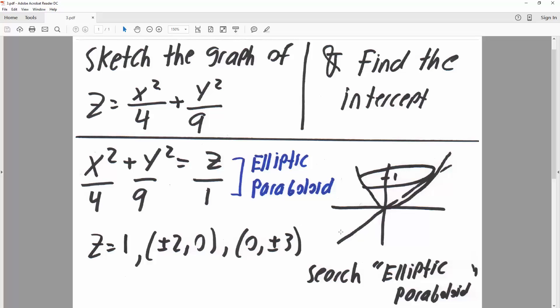And so now we do a sketch. The main thing we need to know is that it's an elliptic paraboloid. And so the general shape will be something like this. We know that this is x, this is y, and this is z. We know that z is 1 and we just apply our intercepts.